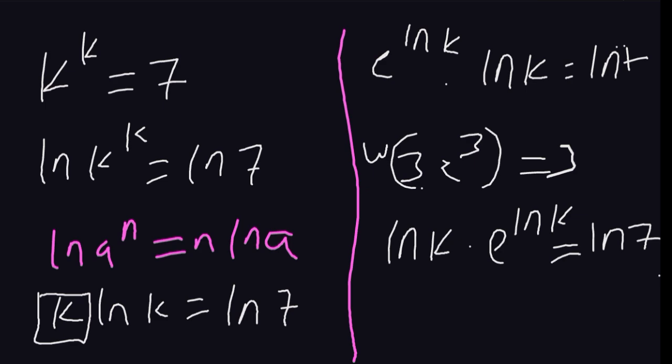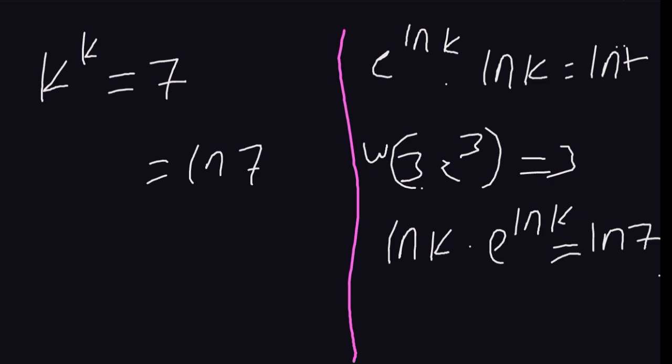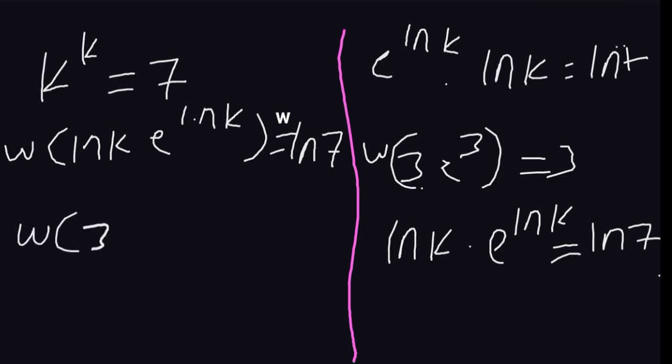Now from here, we are going to apply the Lambert W function. We have W of the ln of k times e to the ln of k equals the ln of 7. Remember I told you that W of 3e to the 3 equals 3. So assume this is our 3 and it is here again, meaning that I shall have the ln of k equals the ln of 7.